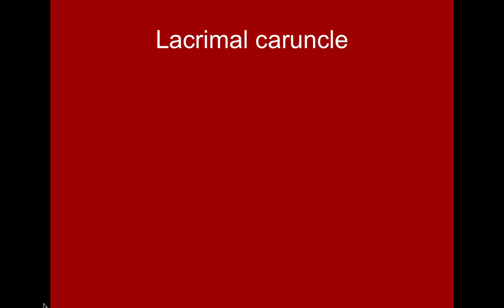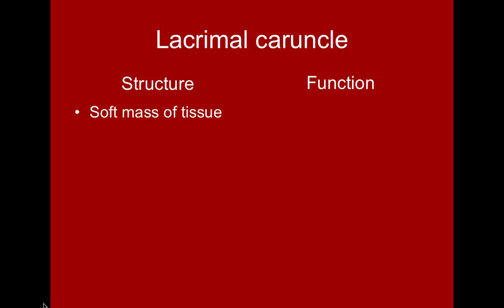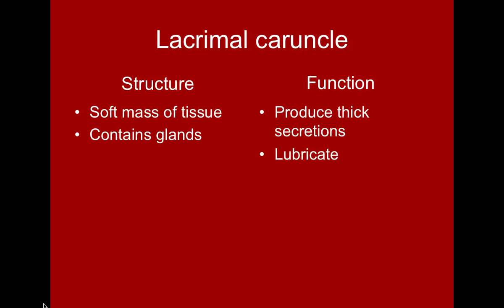The lacrimal caruncle is a soft mass of tissue which contains glands, and these glands produce a thick secretion that helps to lubricate the eye. From time to time these secretions leak out of the eye, especially when we are sleeping, and they become that crusty material — sometimes called 'sleep in the eye.' Those are just extra secretions that have dehydrated and are not harmful.